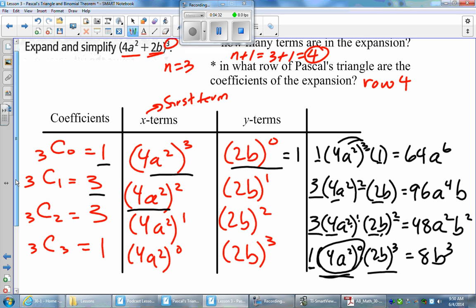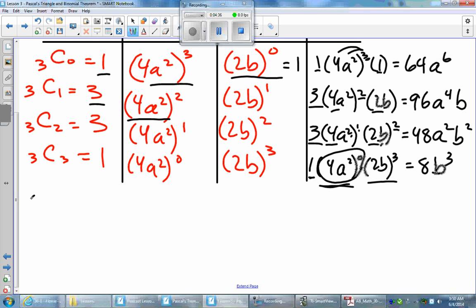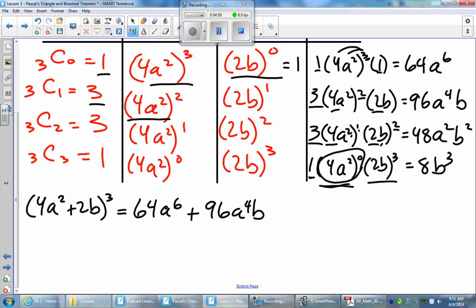I'm going to finish this question by stating the final expansion. My original question is 4a squared plus 2b all cubed. Once I expand, what I end up getting is 64a to the power of 6 plus 96a to the power of 4b plus 48a squared b squared plus 8b cubed, and that's how you do that expansion.